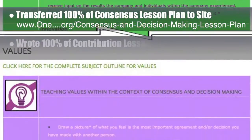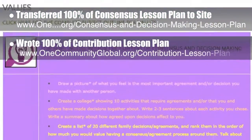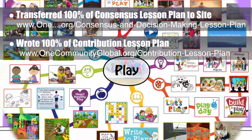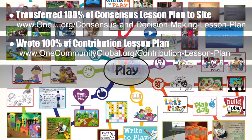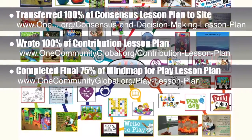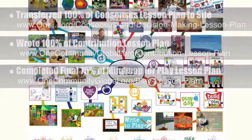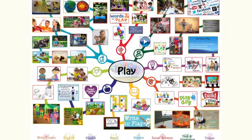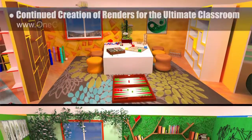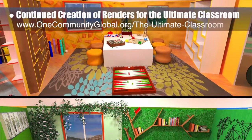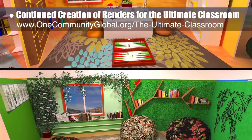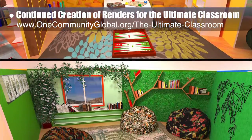Behind the scenes, we completed 100% of the written part of the contribution lesson plan. We also completed the final 75% of the mind map for the play lesson plan, bringing it to 100% complete. In addition, the core team continued creation of renders for the ultimate classroom — adding items and updating textures for the yellow and green rooms, and adding updated windows as well.